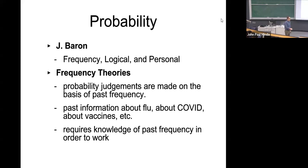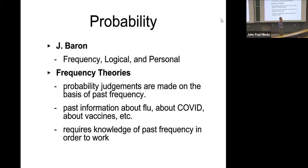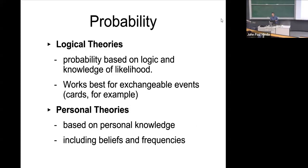The first and most common approach is the frequency theory: when estimating how likely something is, you base it on your own observations of past frequency — how often you've been sick, or how often you've seen someone texting while driving. This is an inductive process that requires knowledge of past frequency in order to work.